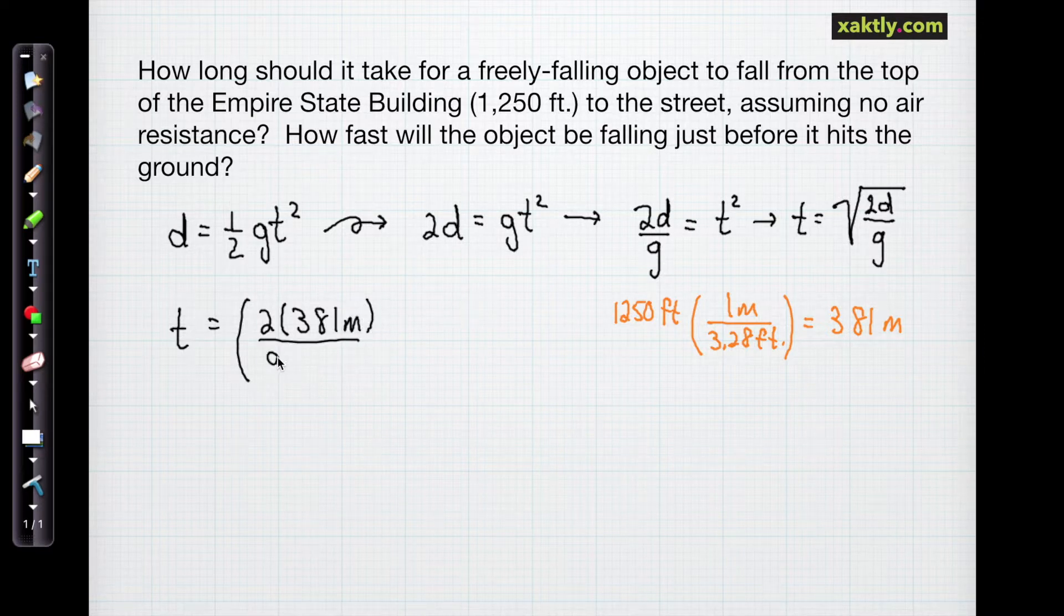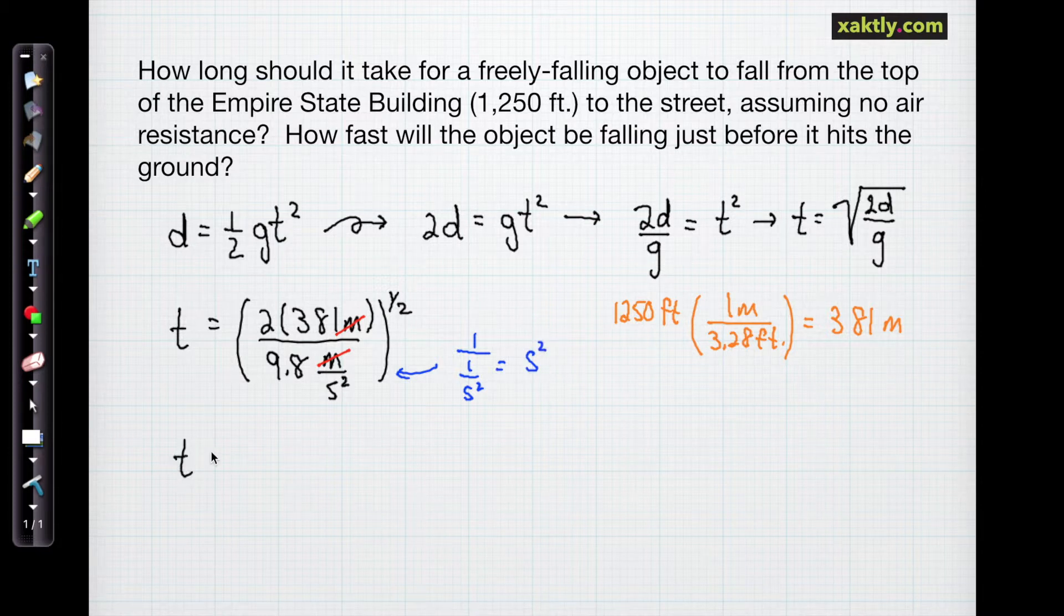and so the Empire State Building is 381 meters tall. And then we divide by g, 9.8 meters per second squared. If I cancel some units here, meters will cancel meters. I'm left with 1 over second squared, but I'll be taking the square root of that. So it's 1 over seconds. So that's going to be time in seconds. I wrote it as second squared, but I meant seconds. So if you just do that arithmetic, the time is 8.82 seconds.